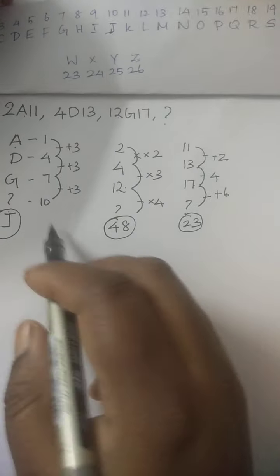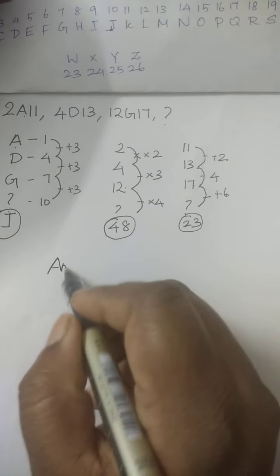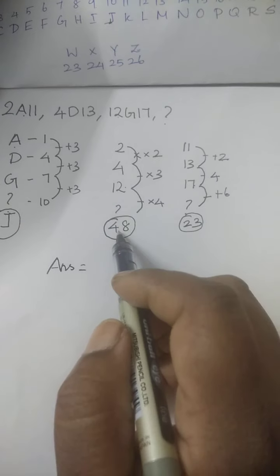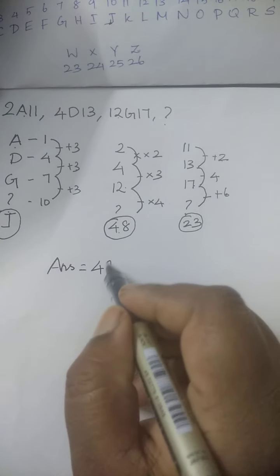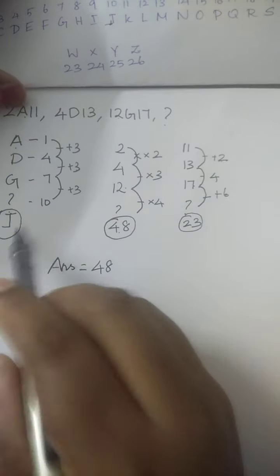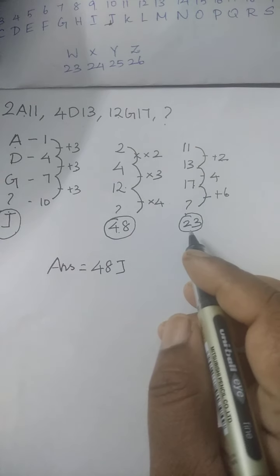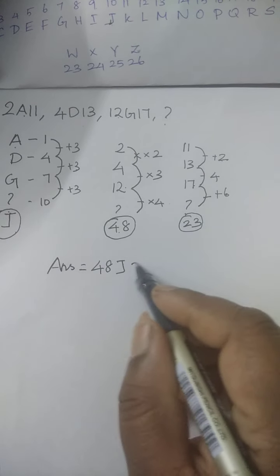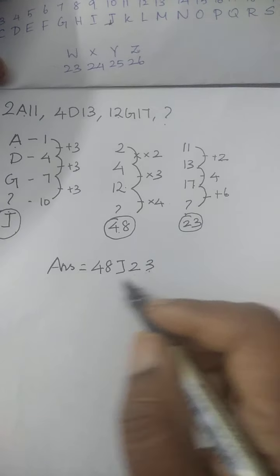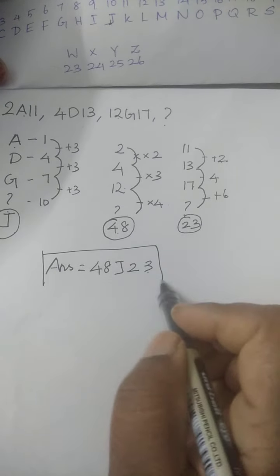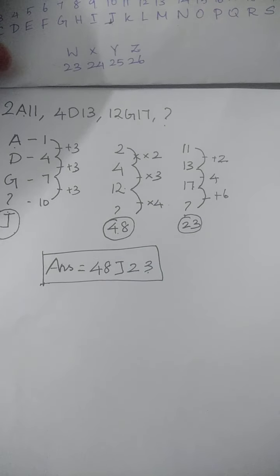So hence the final answer is: what's the first element we have found? Yes, 48. And the alphabet is J. Then the other numeric one is 23. Hence the answer is 48J23.